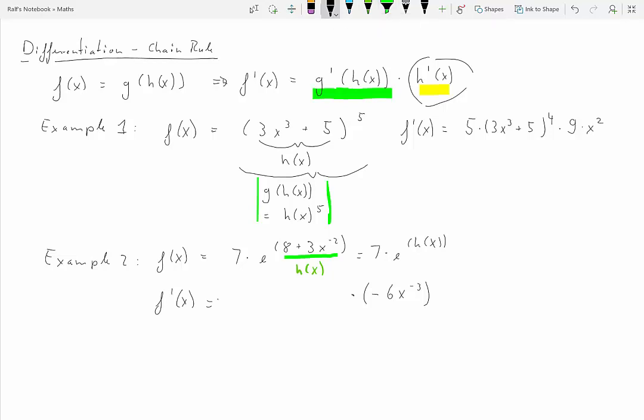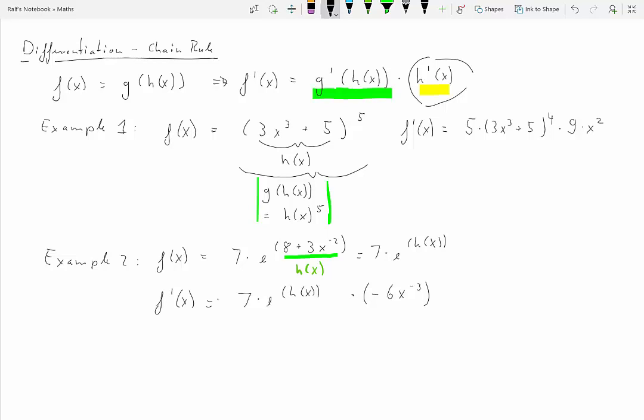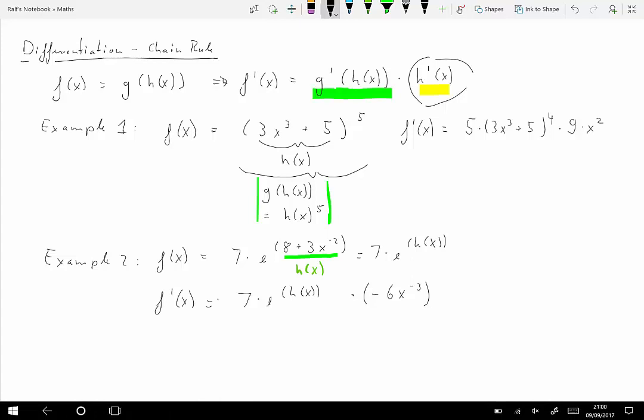What we now need is the derivative of the g part. But the g part is just 7 times e to the something. And e to the something, we know the derivative of that is just again e to the something. So we have 7 times e to the h and then times negative 6x to the negative 3. So altogether we are having 7 times e to the h. Now we substitute in again what h is: 8 plus 3x to the negative 2, and then at the end h prime x which is negative 6 times x to the negative 3.